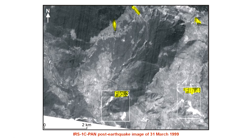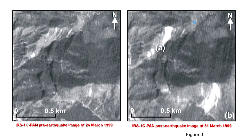If we compare this image with the image before the earthquake, we can determine which landslides were induced by that particular earthquake of 29th March 1999. Here are the pre-earthquake and post-earthquake images from our own Indian remote sensing satellite IRS 1C using its panchromatic sensor. The pre-earthquake image is from 26th March — just 3 days before the Chamoli earthquake — and the right-hand image is from 31st March 1999.